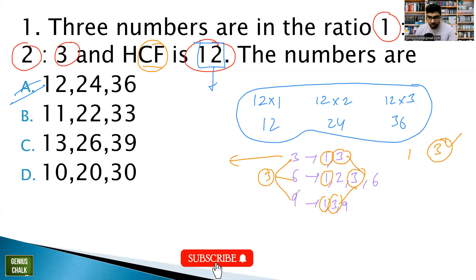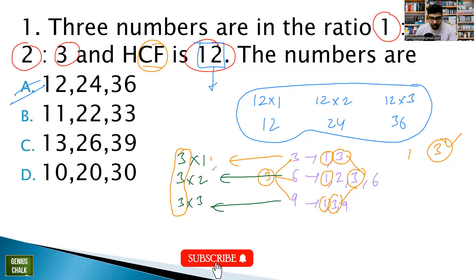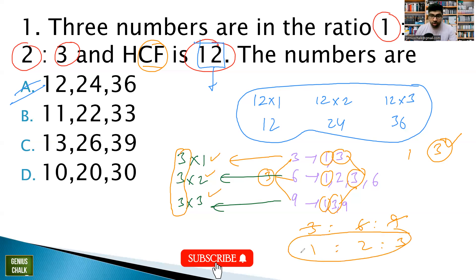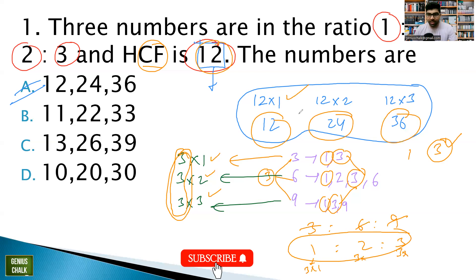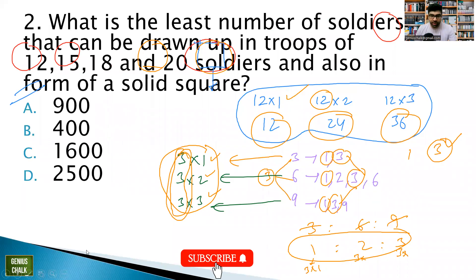Using the similar concept: 3 can be written as 3×1, 6 as 3×2, and 9 as 3×3. You can observe that 3 is the HCF present everywhere, and these numbers are in ratio 1:2:3. So if three numbers are in ratio 1:2:3 and their HCF is 3, you just multiply each ratio term by the HCF. Here HCF is 12, so the first number is 12, second is 24, and third is 36.